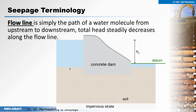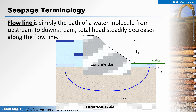If you consider a certain water particle from this point here, it will flow along this path — along this blue line — going to the downstream side. This path of the water molecule as it flows from the upstream side to the downstream side is what we call a flow line.